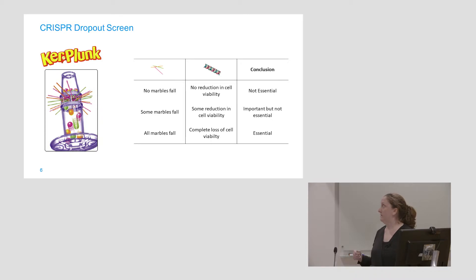And then the third and final outcome is you pull a stick and all the marbles fall. You are out of the game. And this is what I'm really looking for in my project. When we switch off a gene, can we kill the cell? If that cell dies, we've identified a gene that is essential to the survival of the cell. And any good drug is going to be killing our cancer cells. That's the real aim that we want to go for in this study.